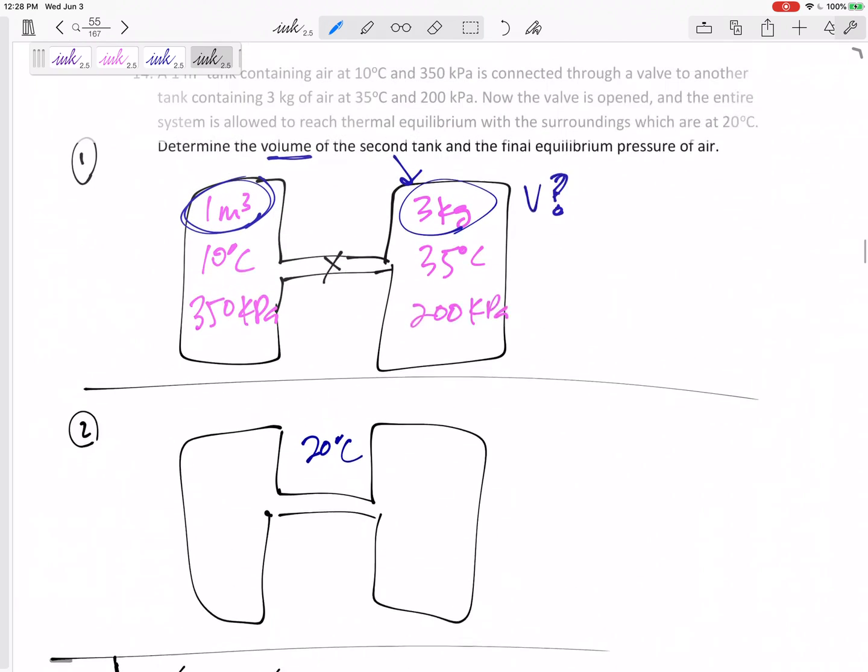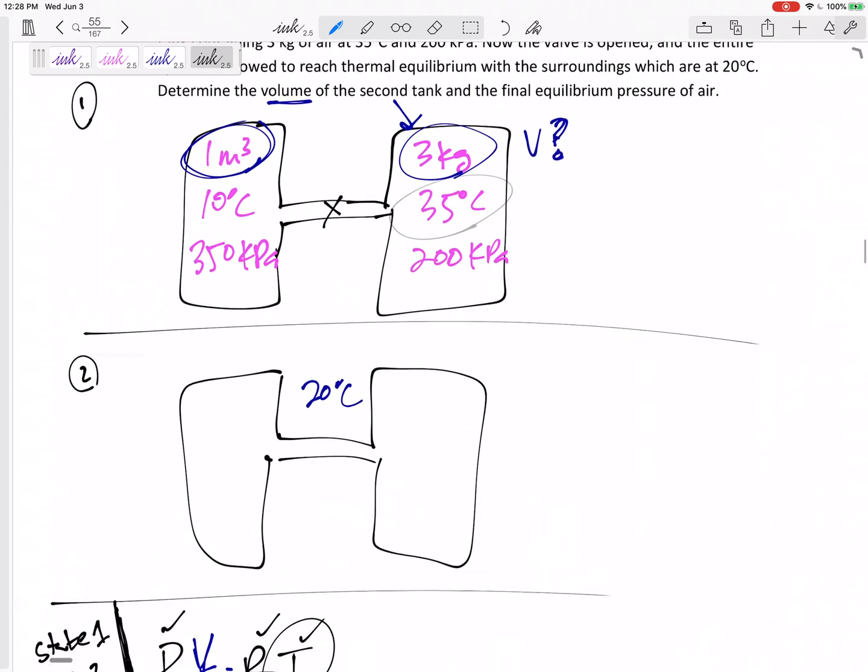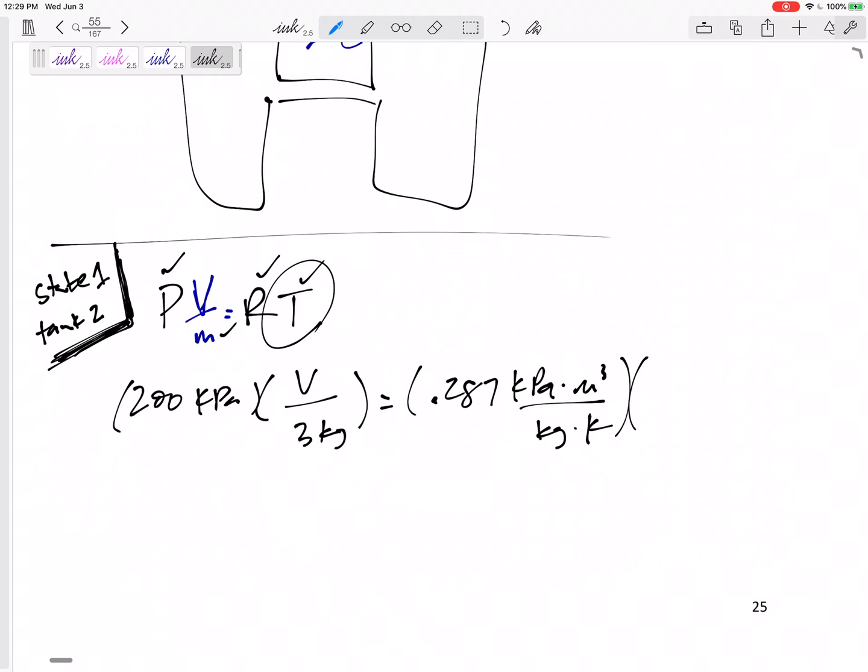And then what is the temperature? The temperature 35°C. Can I just plug in 35? No. The units help you out, but for PV=RT this temperature needs to be absolute temperature in Kelvin. So I need to take 35 plus 273, so that would be 308 K. Let's see if the units work out. That Kelvin cancels with that Kelvin. I've got kPa and kPa, kilogram and kilogram, meters cubed and meters cubed.